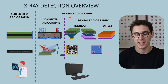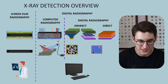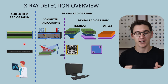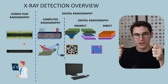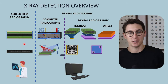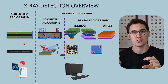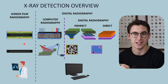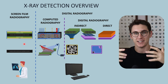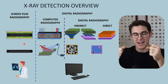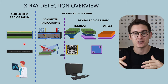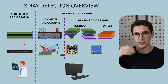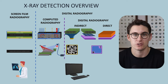We can further subdivide x-ray detection systems into cassette-based systems and cassette-less systems. Both screen film radiography and computed radiography require us to hold a cassette that we place behind a patient. Once we've exposed the patient to x-rays, we physically take that cassette away for processing in order to create our image — we don't get the image instantaneously. That cassette needs to be opened up, read out, and then we can create an image, be it a physical film or a digital image sent to our computer in computed radiography.